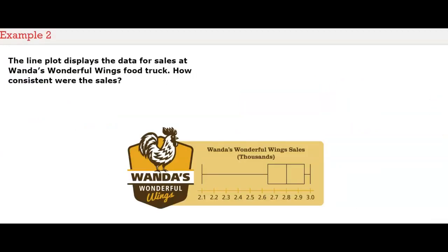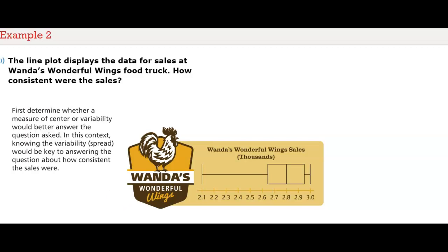The line plot displays the data for sales at Wanda's Wonderful Wings food truck. How consistent were the sales? First, determine whether a measure of center or variability would better answer the question asked. In this context, knowing the variability spread would be key to answering the question about how consistent the sales were.